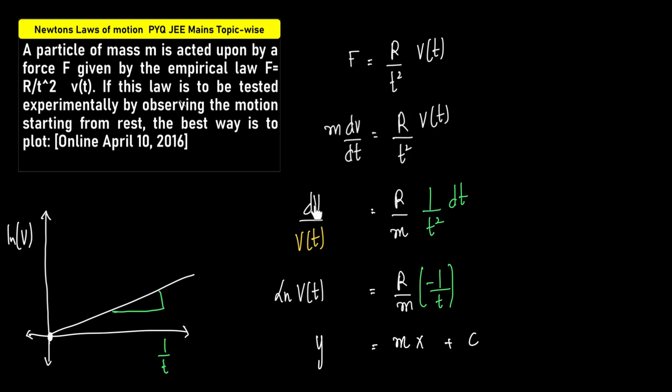So keeping dv here, bringing v(t) to the left-hand side, and bringing m to the right-hand side, we have dv/v(t) = (R/m)(1/t²)dt.